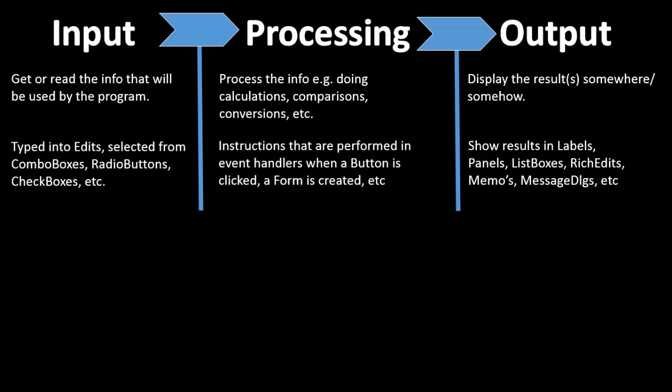But it can also be things like changing a component's color to green to indicate success or red to indicate failure. Anything that is produced by your program that keeps the user informed can be considered output.